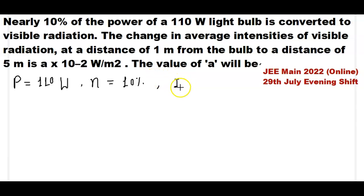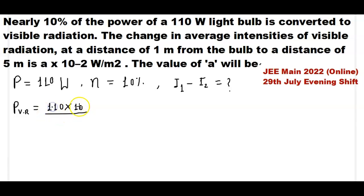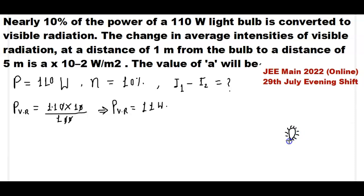We calculate the change in intensity of radiation from the distance of 1 meter to the distance of 5 meters. We name the 1 meter intensity value I1 and the 5 meter intensity value I2. The power of visible radiation equals 110 watt with 10 percent efficiency, so 110 × 10 divided by 100. The zeros cancel, giving power of visible radiation equal to 11 watt. The electric bulb radiates electromagnetic waves in all possible directions.